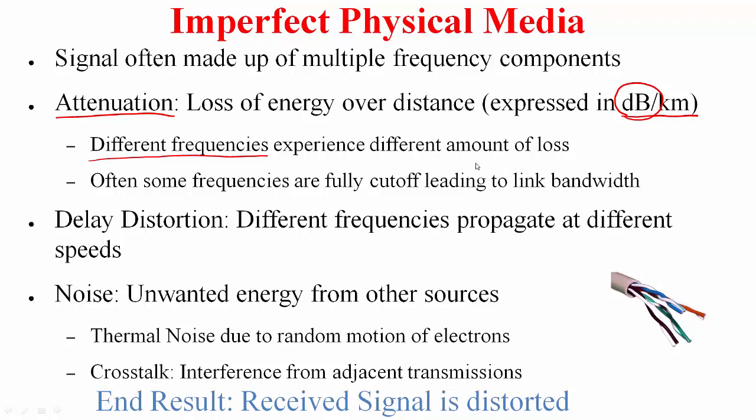Another thing to note here is that the different frequencies of the electromagnetic waves experience different amounts of loss. Often some frequencies are fully attenuated, leading to what is called a link bandwidth. This basically captures the range of frequencies that suffer little attenuation.